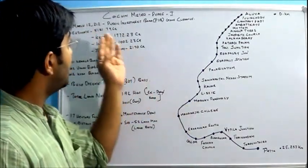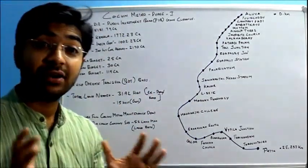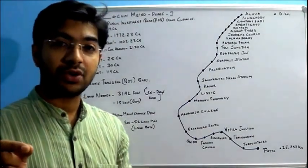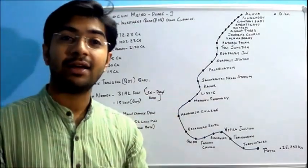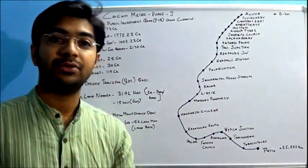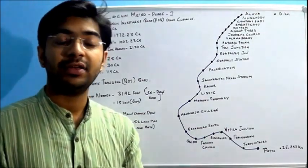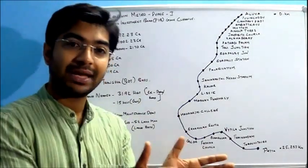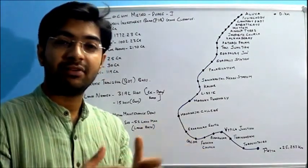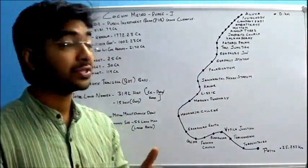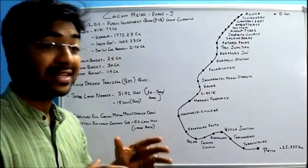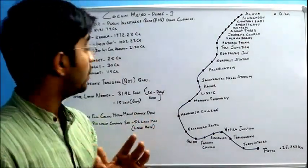So March 12, 2012, the Public Investment Board gave clearance to the Cochin Metro. Before that, the Kerala government kept 25 crore in the state budget aside for initial developments of the Cochin Metro. Then in March 2012, we got the central government clearance.